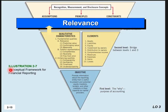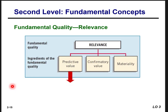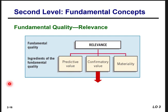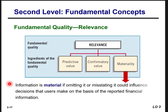The first fundamental quality is relevance. The ingredients of relevance are predictive value, confirmatory value, and materiality. To be relevant, accounting information must be capable of making a difference in a decision. Predictive value means financial information has value as an input to predictive processes used by investors to form expectations about the future. Confirmatory value helps users confirm or correct prior expectations. Materiality means that omitting or misstating information could influence decisions made on the basis of reported financial information.